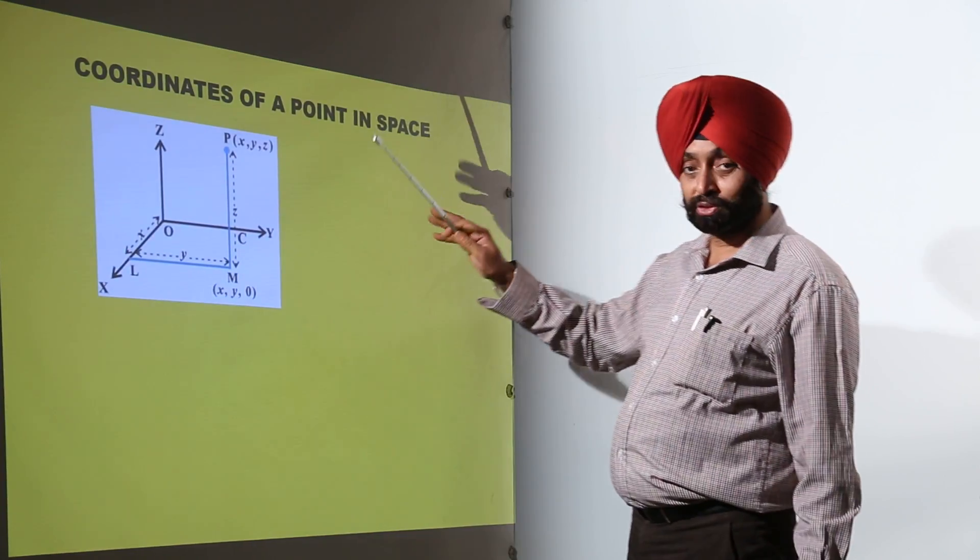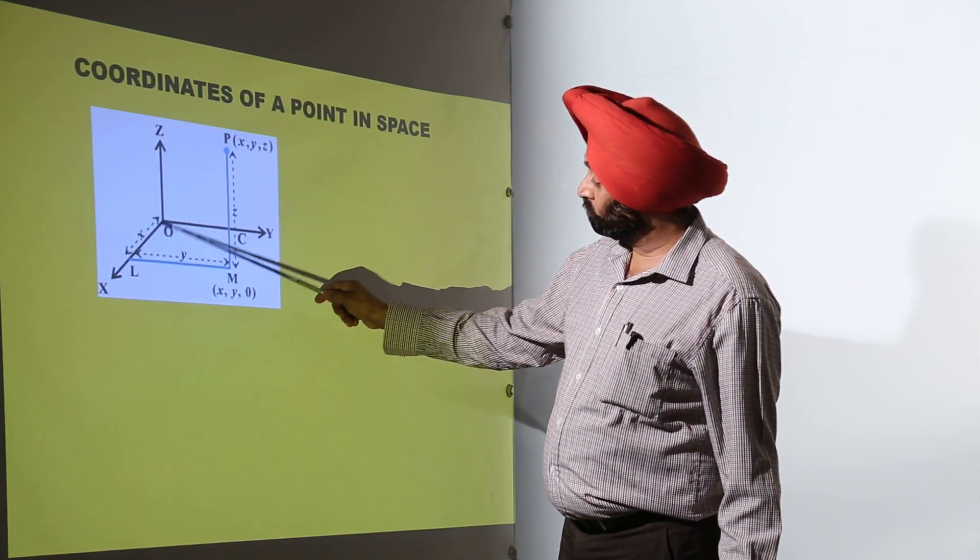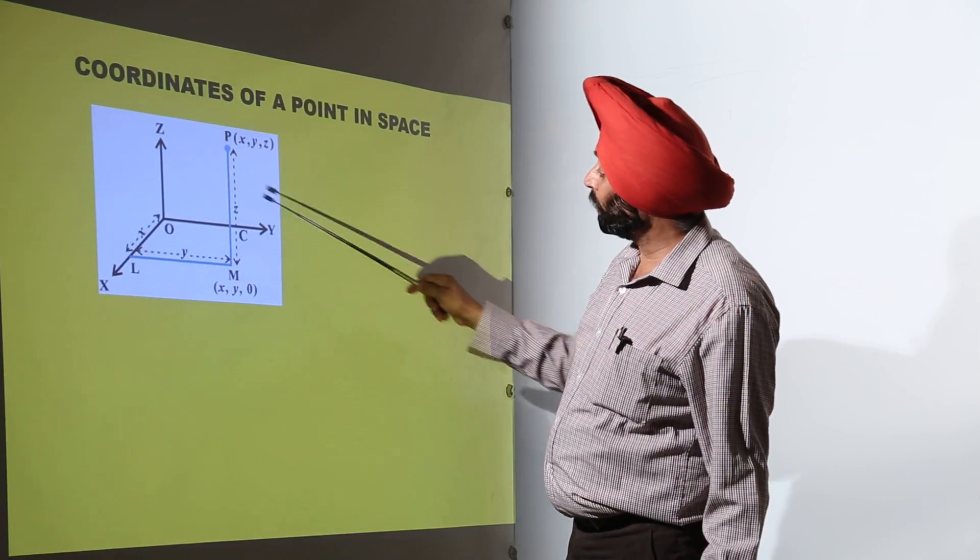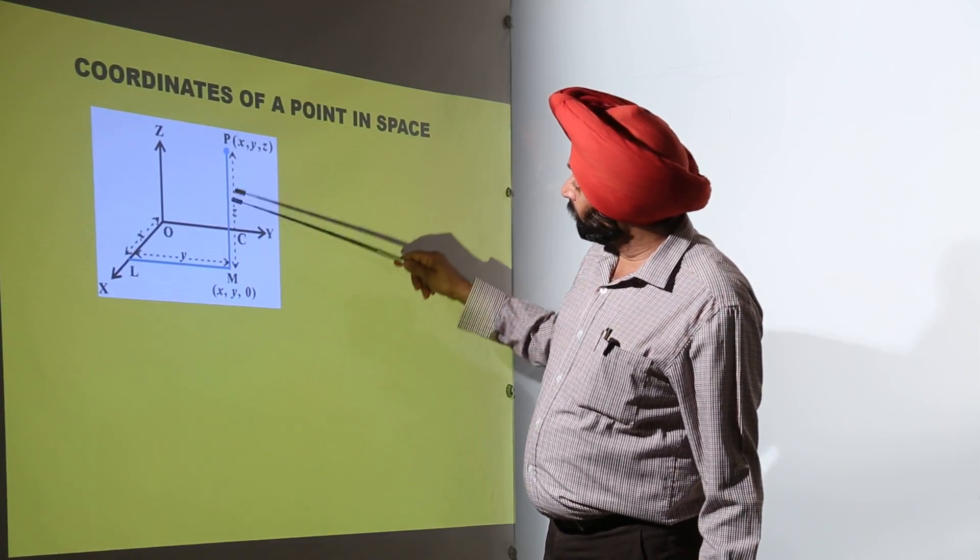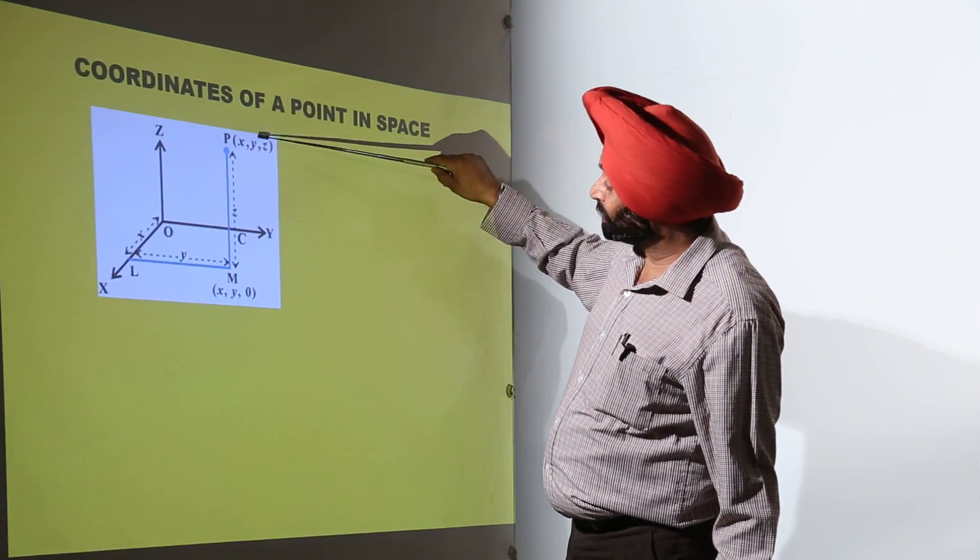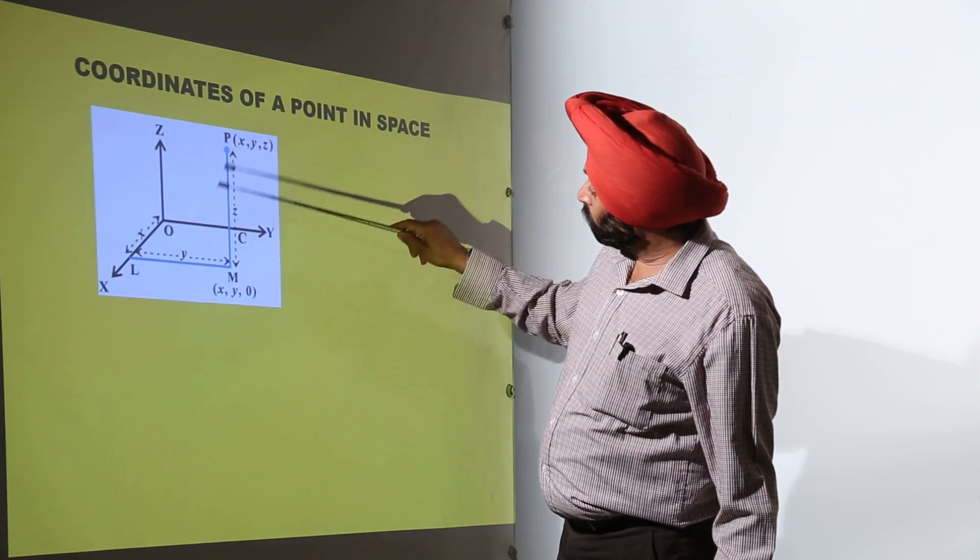A figure now. Suppose I have taken here OX, OY, and OZ. Is it clear? Now we are having a point P here with X, Y, and Z coordinates. Now what is this X?